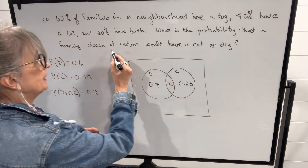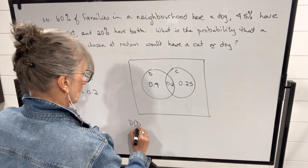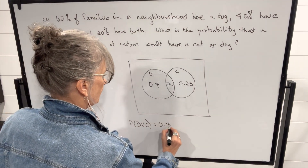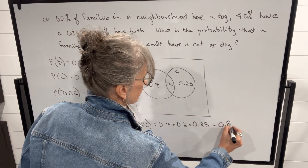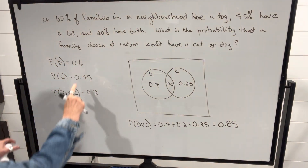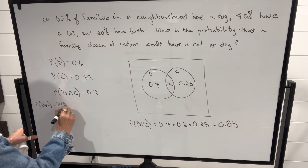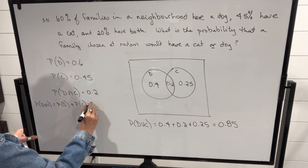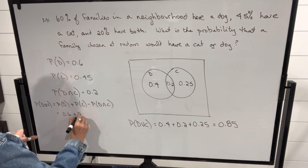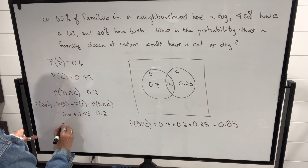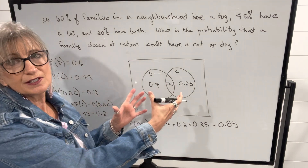Now if I want to know the probability of someone having a cat or a dog, I just add all three regions up. The probability of a dog or a cat is 0.4 plus 0.2 plus 0.25, which is 0.85. We get the same answer using the formula: probability of a dog plus probability of a cat minus probability of a dog and a cat equals 0.6 plus 0.45 minus 0.2, which is 0.85. You can approach these problems using the formula or using the Venn diagram.